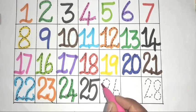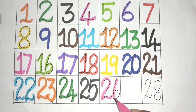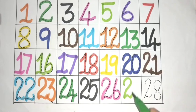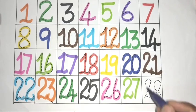Two, five, twenty-five. Two, six, twenty-six. Two, seven, twenty-seven.